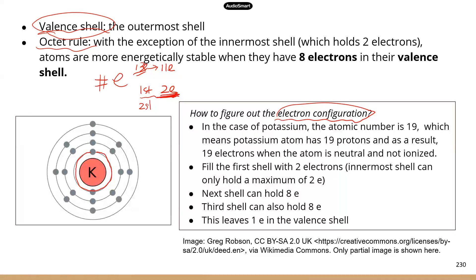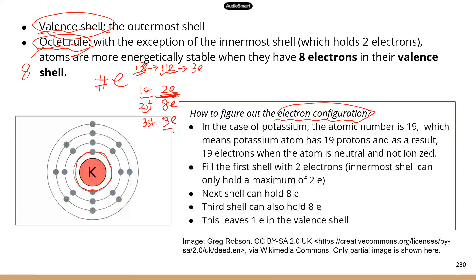The second shell follows the normal octet rule — octet refers to eight — so it can hold up to eight electrons. If you have more than eight, you can only put eight in there because eight is the maximum. If you have less than eight electrons, then you put whatever is left in that shell. In this case, 11 — you have more than eight, so this shell can hold up to eight. That brings you down to three electrons. The next shell can also hold up to eight, but you only have three left, so you put three in there. This is the electron configuration for this particular element.